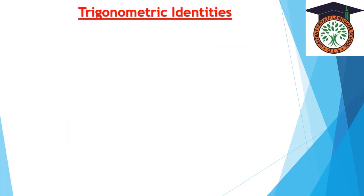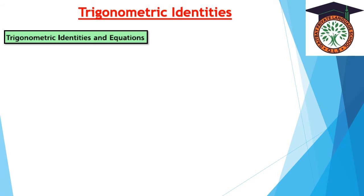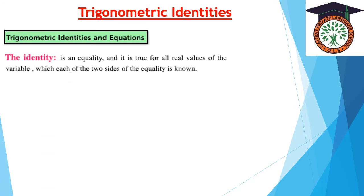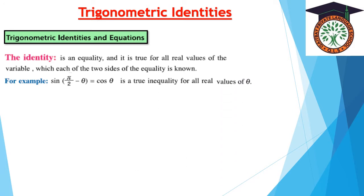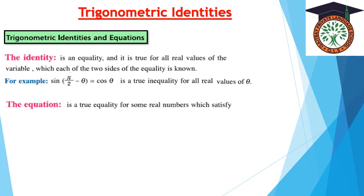Our lesson today: trigonometric identities and equations. What is the difference between an identity and an equation? An identity is an equality that is true for all real values of the variable. For example, sin(π/2 - θ) = cos θ is a true equality for all real values of θ.